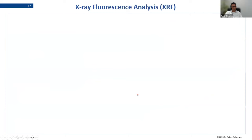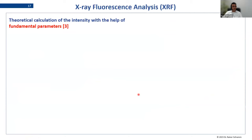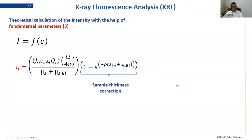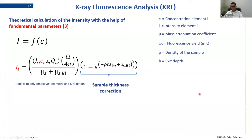Last but not least, we come to the real use of fundamental parameters — calculating the whole approach by describing everything between concentration and intensity using the theoretical approach via the Sherman equation. In theory, no standard material is used. In the real world I would always use some standard materials at least to get the sensitivity of the spectrometer and to verify the model, but from the theory side no standard material is used if all conditions of the model are fulfilled. I described this in the last webinar; here I just want to present it to complete this overview.